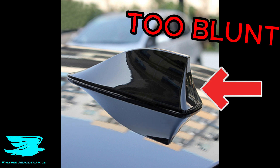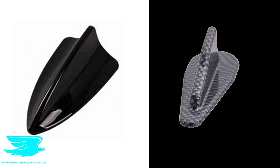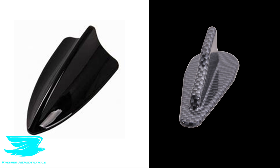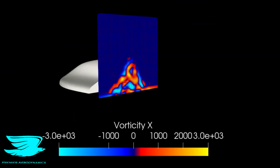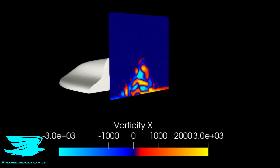One thing that would probably make it better is smoothing the back instead of this abrupt stop. And remember how I said that these things look a lot like vortex generators? To see if they are, we have this plane which shows the vorticity moving downstream of the antenna.